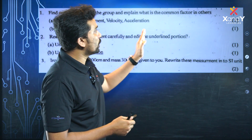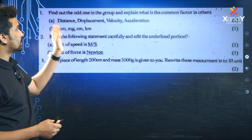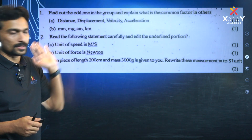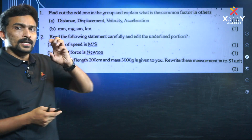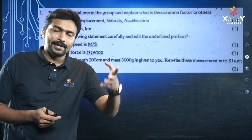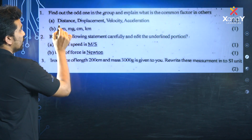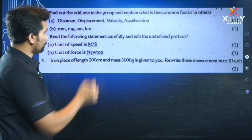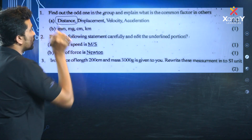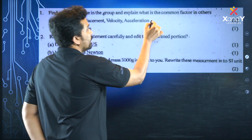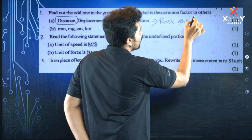Find the odd one out and explain the common factor in the others. The group is: distance, displacement, velocity, acceleration. We have learned that these are scalar and vector quantities. Distance is a scalar quantity, while the other three — displacement, velocity, and acceleration — are vector quantities. So the odd one out is distance.